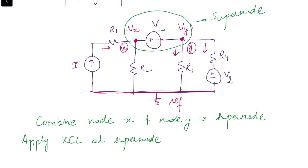The direction of the current source current I is known — it flows toward node X, so it is incoming. We assume all remaining currents are outgoing: current through R2 leaving node X, current through R3 leaving node Y, and current through R4 leaving node Y. By KCL, the sum of incoming equals the sum of outgoing, giving: I = (VX − 0)/R2 + (VY − 0)/R3. This is our first equation.